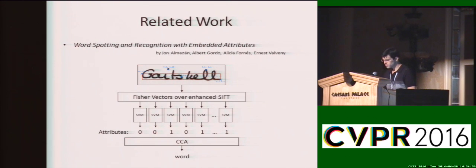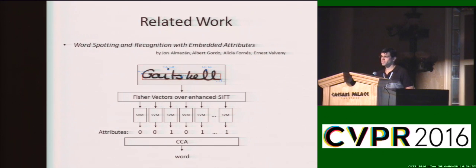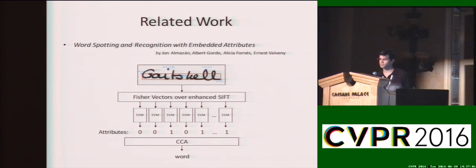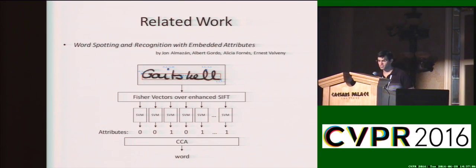The work of Almazan, Gordo, Fornes, and Valveni is also very relevant. Our binary attributes are essentially the same, and so is our usage of CCA for recognition. With regards to performance, using deep learning, which was not an easy fit, we got much higher numbers.